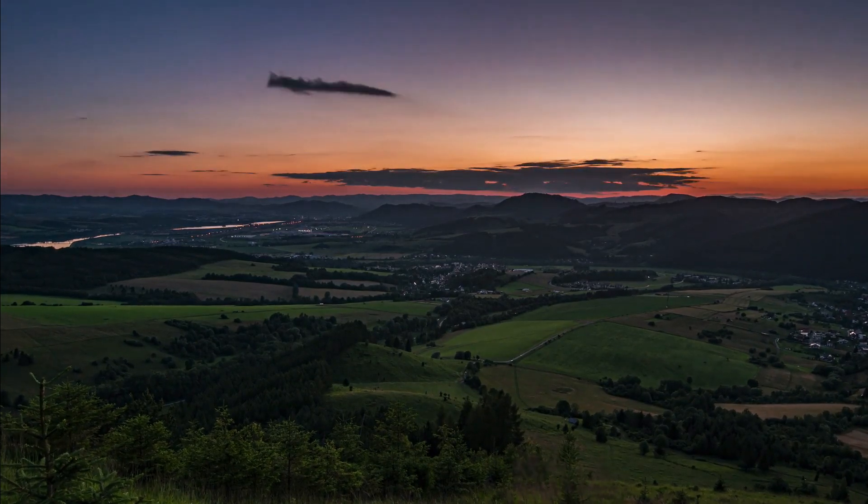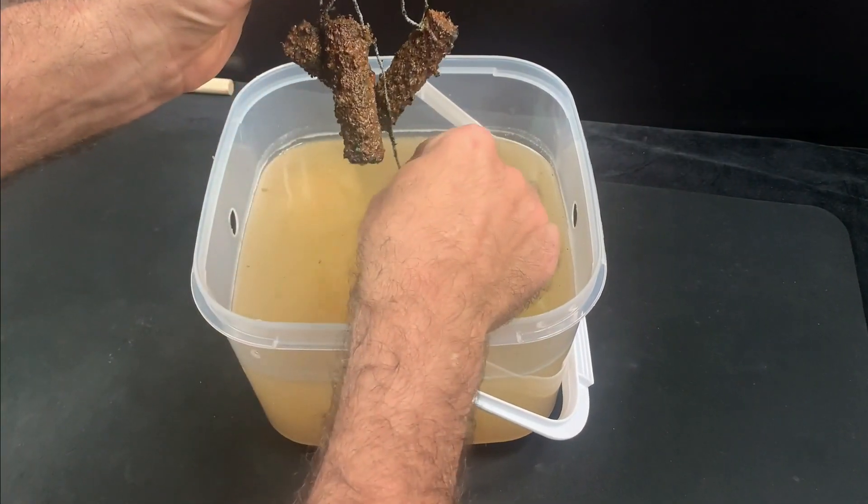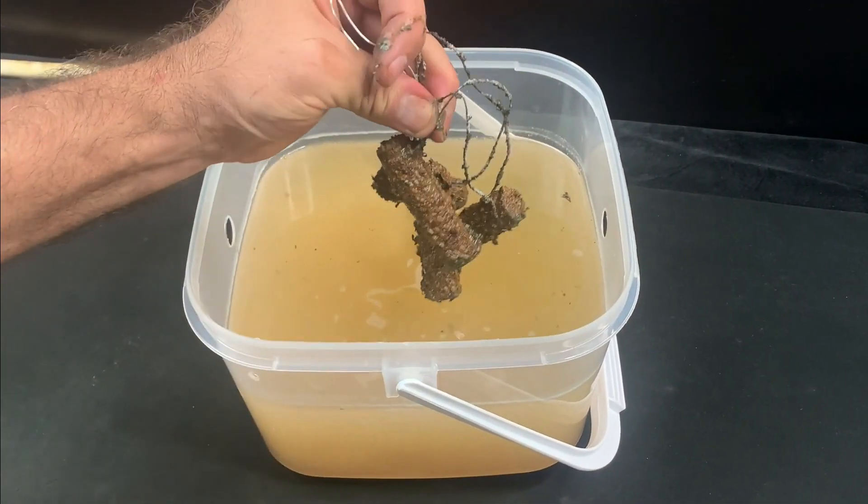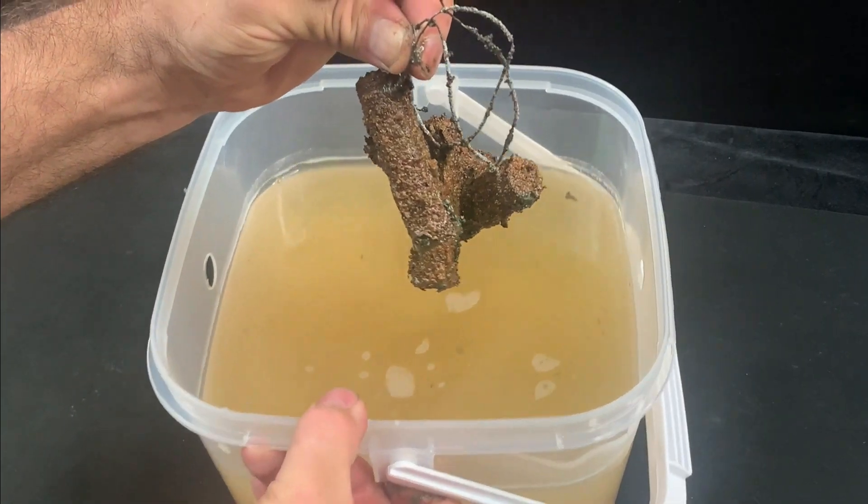Depending on the size of your sacrificial metal you might need to stop, grind some of the rust off to reveal fresh metal and then continue. But given the size of most locks this shouldn't be an issue if you start with a decent sized anode.